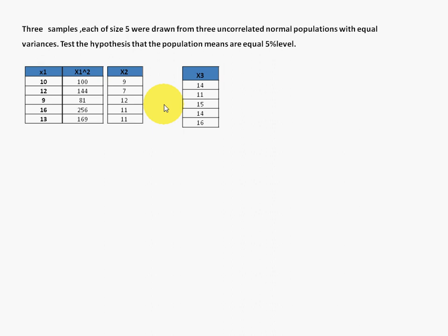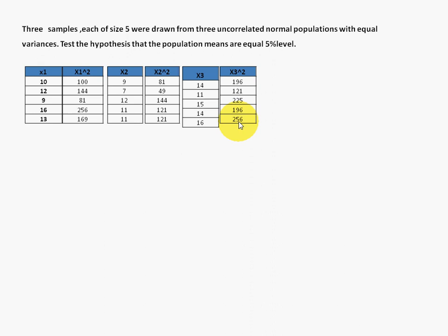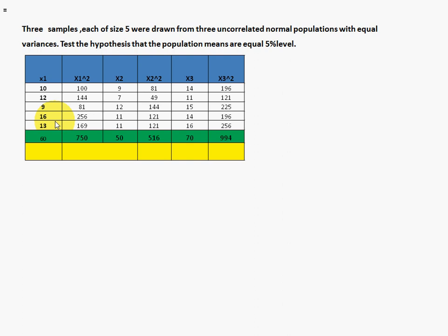We have to calculate x1 squared, x2 squared, and x3 squared. In the examination, these are not provided — we calculate them ourselves. For example: 10²=100, 12²=144. For x2 square: 9²=81, 7²=49, 11²=121. For x3 square: 14²=196, 16²=256. Summing up: σx1=60, σx1²=750; σx2 and σx2²; σx3 and σx3² are similarly noted.